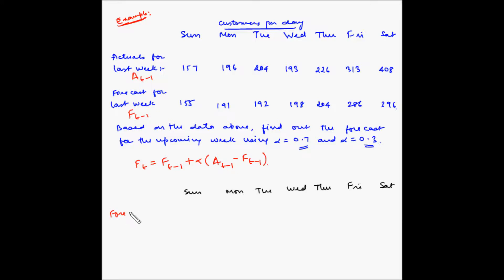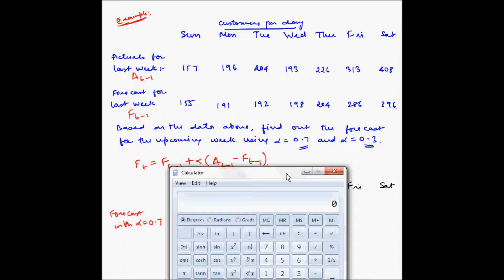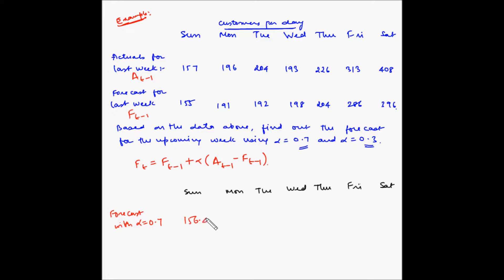Let us first find out the forecast with alpha equal to 0.7. For Sunday, A(t-1) is 157, so 157 minus F(t-1) which is 155, gives 2. Multiplying by alpha 0.7 gives 1.4, then adding F(t-1) of 155 gives 156.4. So the forecast for Sunday with alpha 0.7 is 156.4.